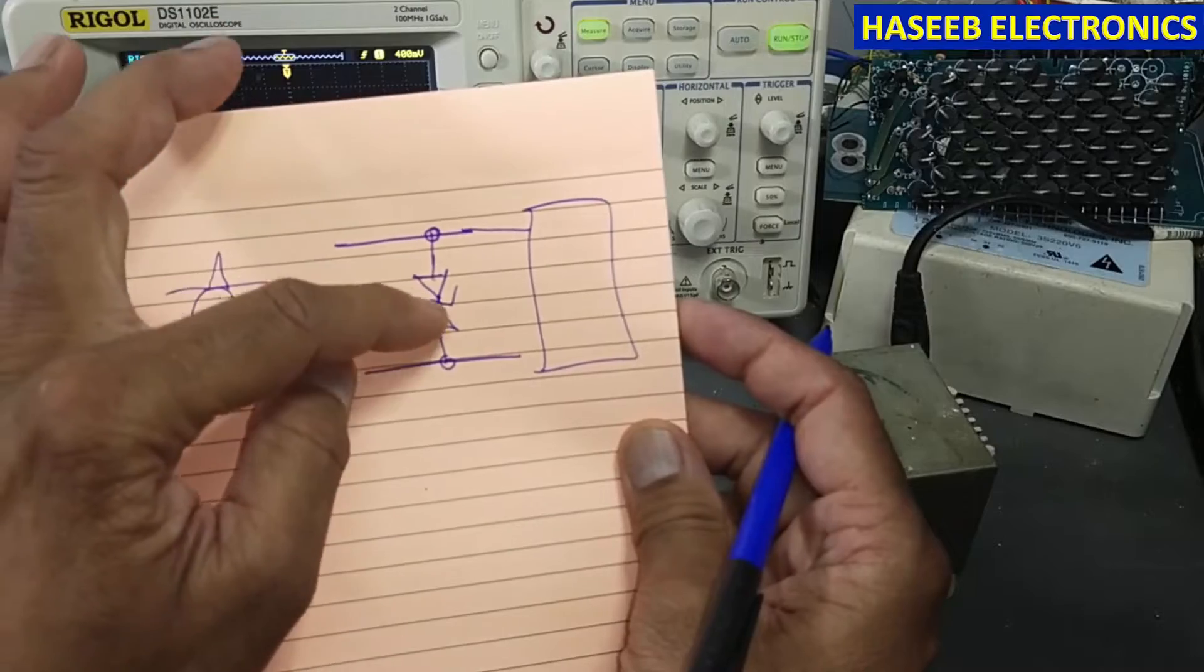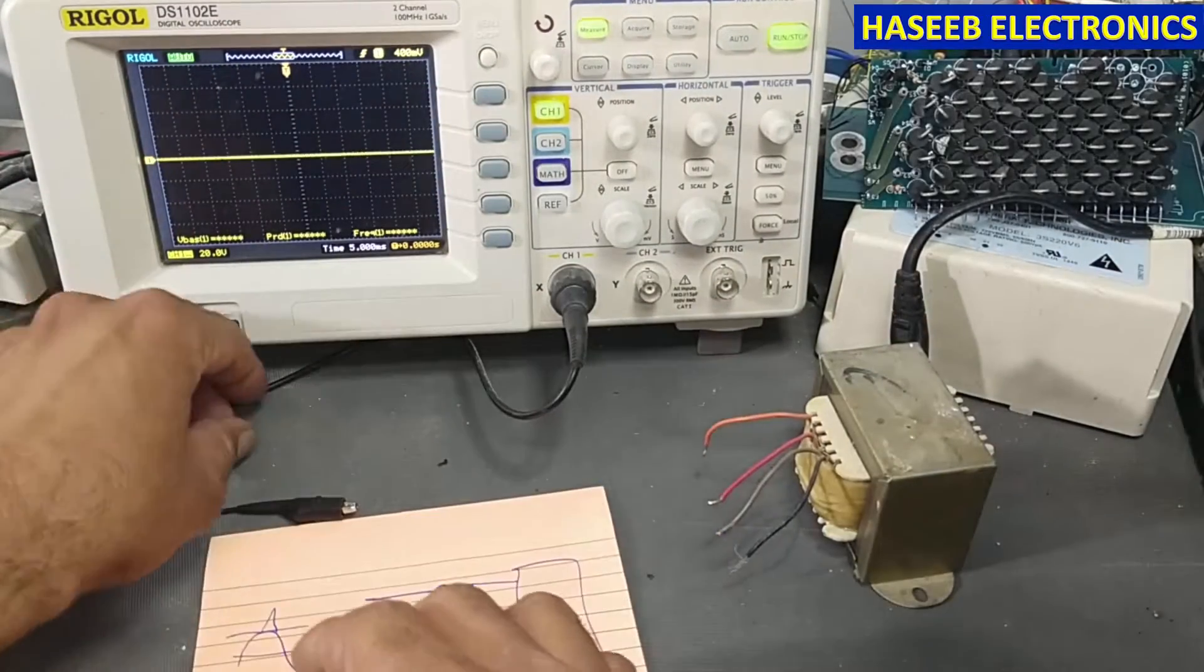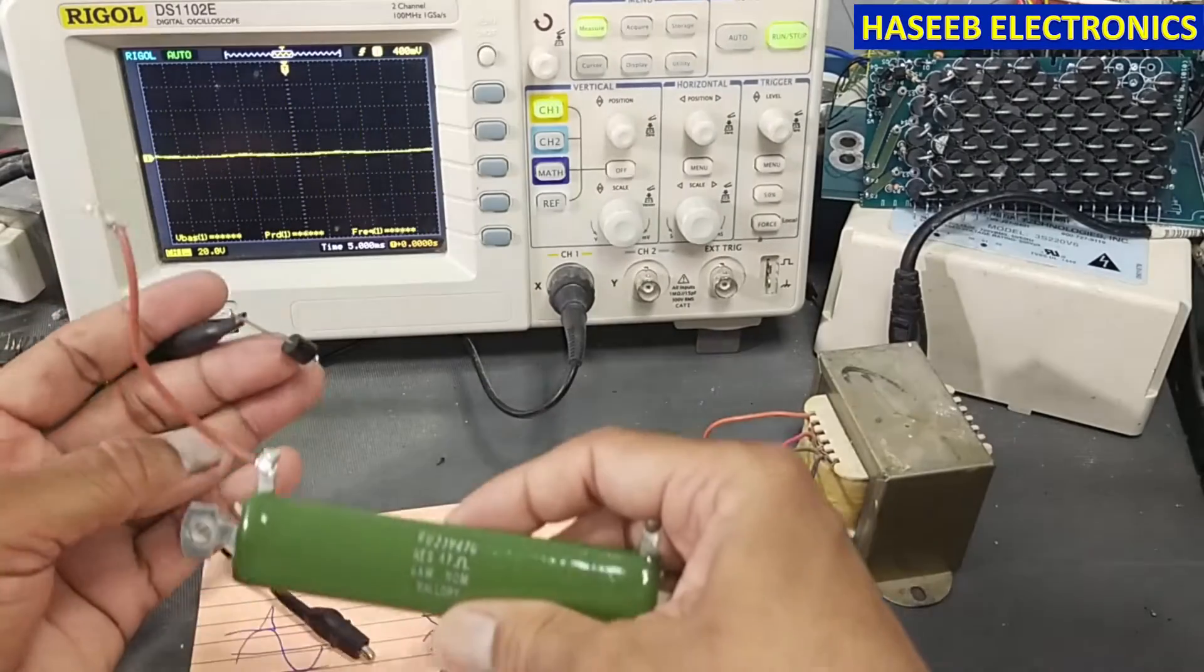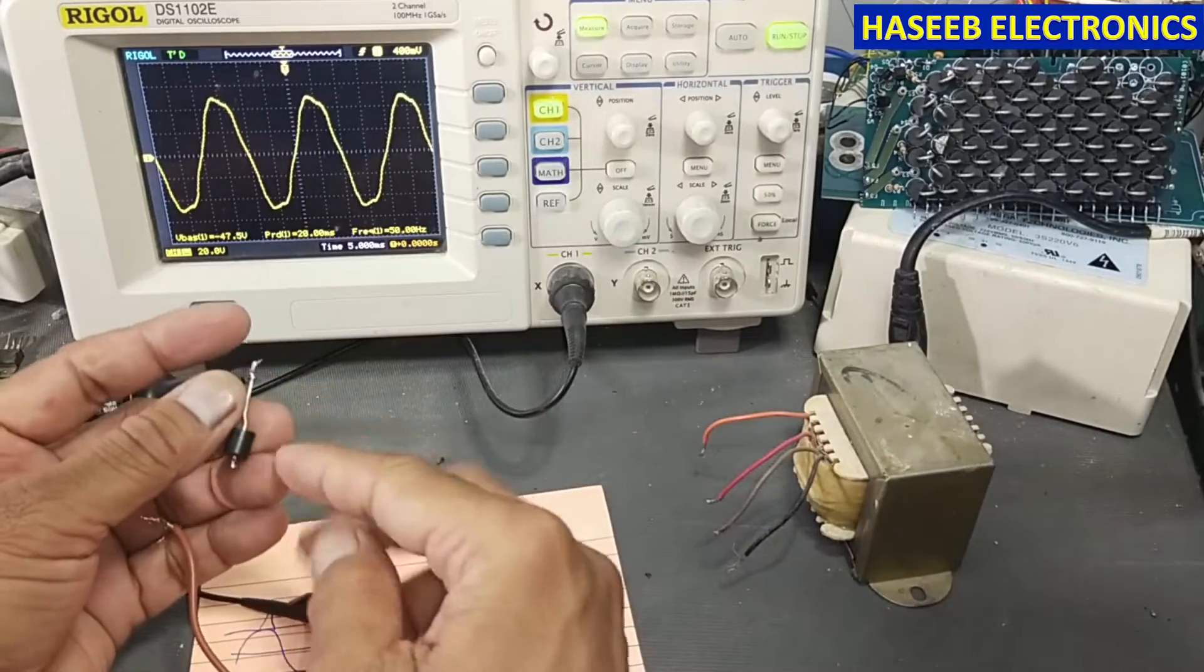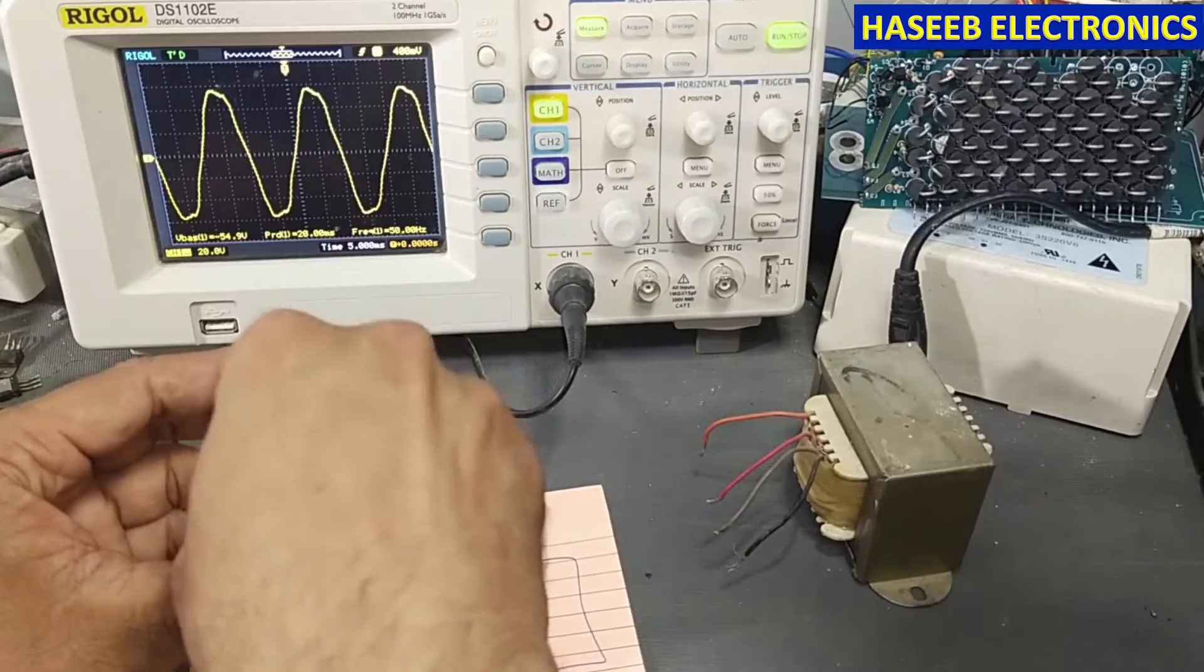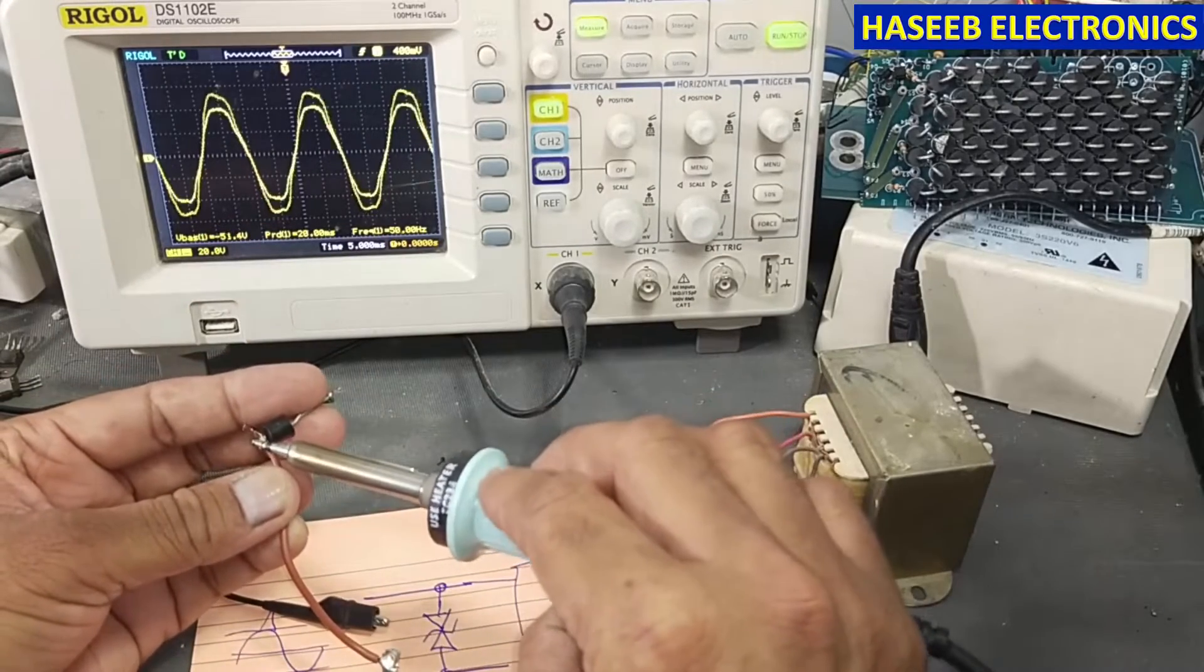Let's check it practically. For that purpose, I will use an oscilloscope. We can also use a multimeter. I will connect a series resistor because if this transformer connects directly, it will drop the voltage and we will not get a good result.